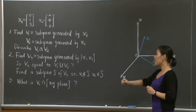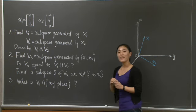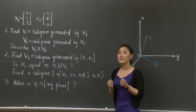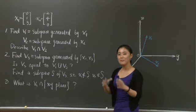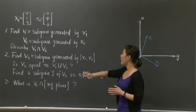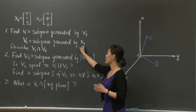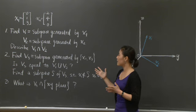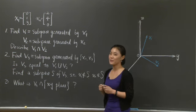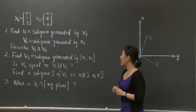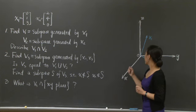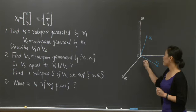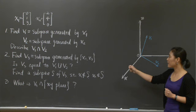Let me say a word about this 'generated by.' What do I mean by a subspace generated by x1? I'm looking for the smallest subspace that contains x1, as small as you can get. Similarly, I want to find the subspace generated by x2, call it v2. Then we want to say something about the intersection of v1 and v2. And we want to put x1 and x2 together and look at the subspace generated by x1 and x2 at the same time — I call it v3.